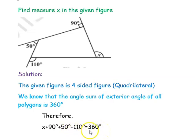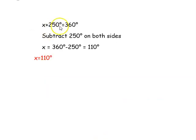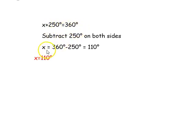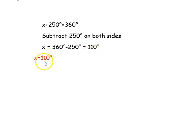Simplifying, we get x + 250° = 360°. Now we subtract 250 degrees from both sides, so x = 360° − 250° = 110°. Therefore, the missing angle x is 110 degrees.